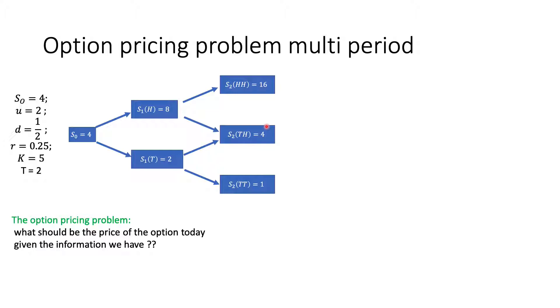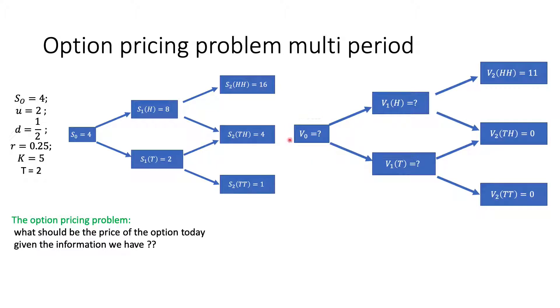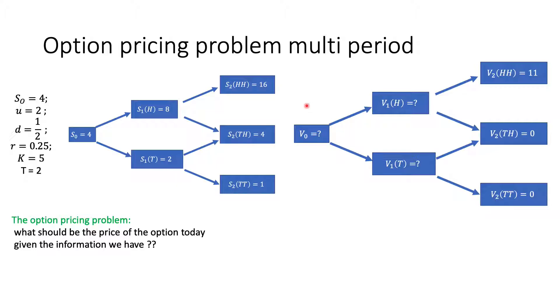As before, the main question we have: what should be the price of the option today, given the information we have? We want to find the value of the option V0 today. We don't know the price today. We don't know the price one period from now. But we actually know the payoff of the option, because in each case we know the stock price if we get head twice, and we know the strike price so we can find the payoff. Given this information, how can we find the price of the option today? We're going to use the arbitrage pricing approach, which is based on replicating the option by trading in the stock and in the money market. If there is no arbitrage, the price of the option should be equal to the value of the replicating portfolio. This is exactly what we did in the one period binomial model.